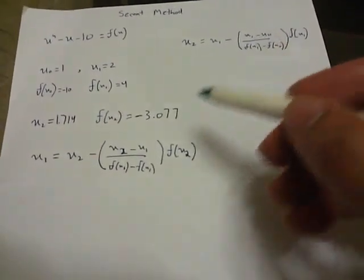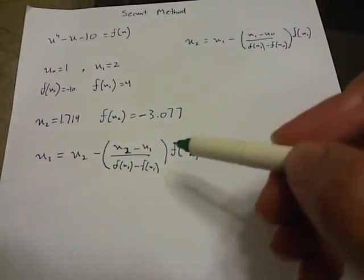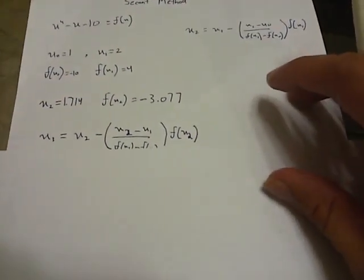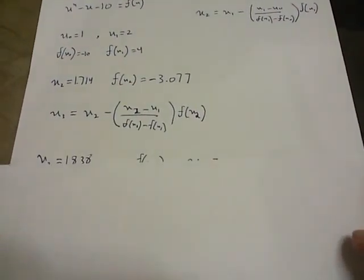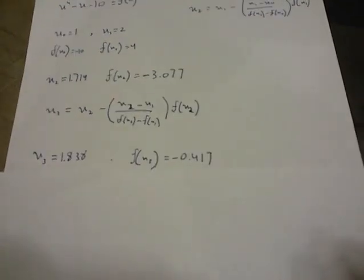And so our x3's value comes out to be 1.838 and the function comes out to be minus 0.417. So now we're really close to the answer.